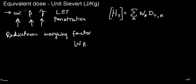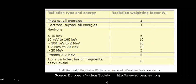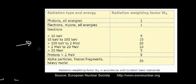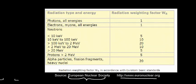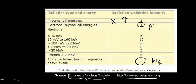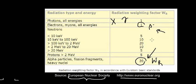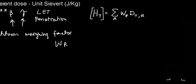Alpha particles have a much higher weight factor than electrons or photons, so alpha and beta radiation cannot be treated the same way. A table from the European Nuclear Society shows that photons (gamma and x-ray) and electrons have low weight factors, while alpha particles have a very high one — demonstrating why equivalent dose is needed.